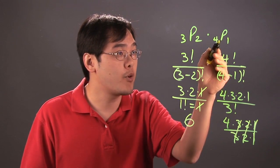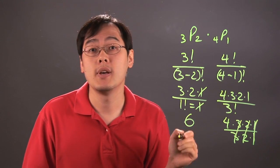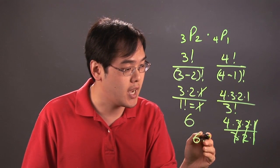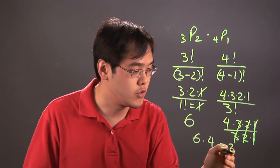So really, 4P1 is just narrowed down to 4. So in actuality, you're multiplying 6 times 4, which at the very end gives you 24.